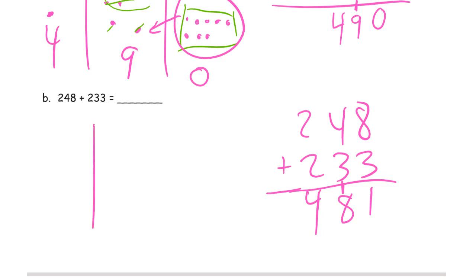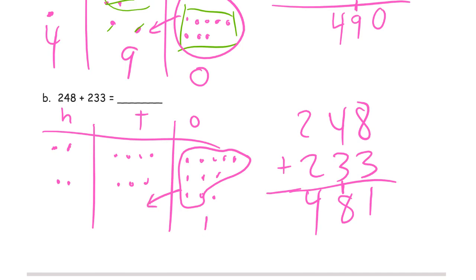And we'll draw our hundreds, tens, and ones chart. I'm just going to label it with an H, a T, and an O. Two hundred, forty, eight, and two hundred, thirty, three. I can see here I only need two more for this eight to make it a ten, so I'm going to have a one left here. There's one more ten right there. And this is one, two, three, four, five, six, seven, one more is eight. And that's four hundreds.